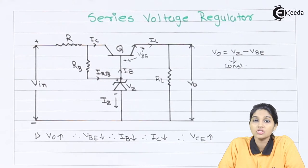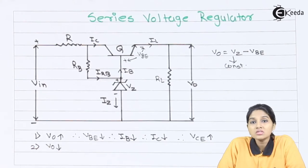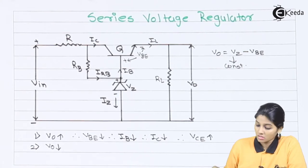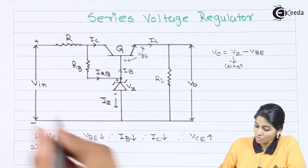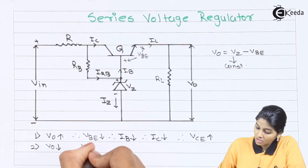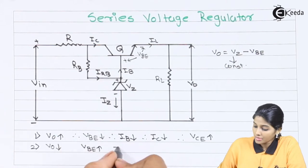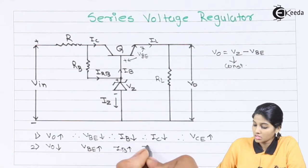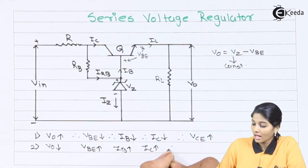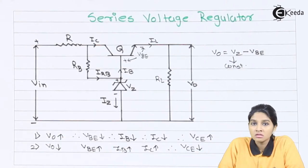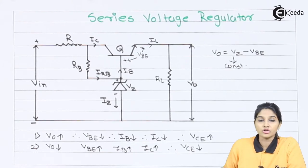Now consider the second condition in which the output voltage V0 decreases. Whenever there is a decrease in the output voltage, the exactly opposite operation takes place. A decrement in V0 causes an increment in Vbe. As Vbe increases, Ib also increases, which increases the collector current Ic, and therefore the collector-to-emitter voltage VCE decreases. This decrease in VCE causes regulation of the output voltage V0.